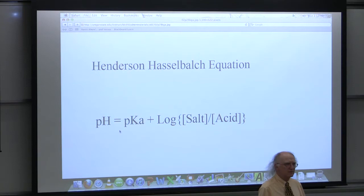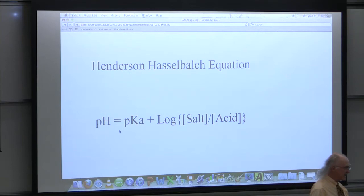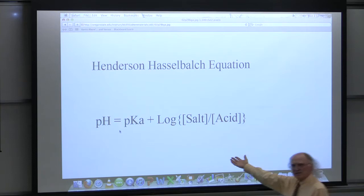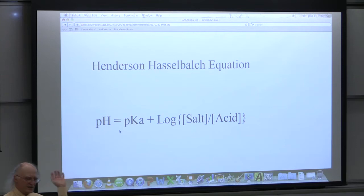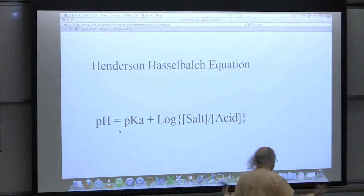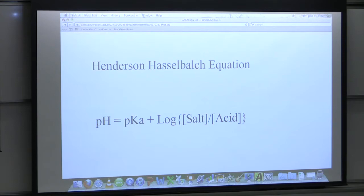At pH 2.5, formic acid has ionized more — it has equal amounts of salt and acid — while pyruvic acid had more acid than salt. The definition of the strength of an acid is how much it ionizes. At the same pH, one acid has ionized more than the other, so formic acid is actually a stronger acid than pyruvic acid. Henderson-Hasselbalch tells us that, and you need to learn how to apply that equation.